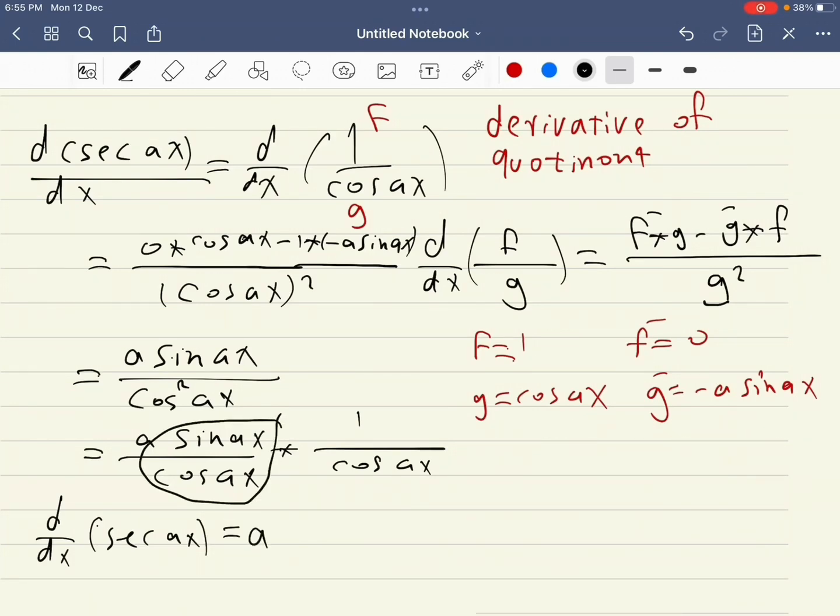We know that the constant is a. Sine ax over cosine ax equals tan ax times one over cosine ax, which equals secant ax. So the derivative is a tan ax secant ax. That's all, I hope this can be helpful. Have a nice time.